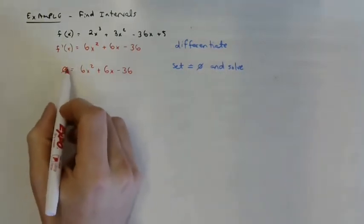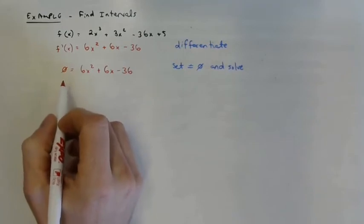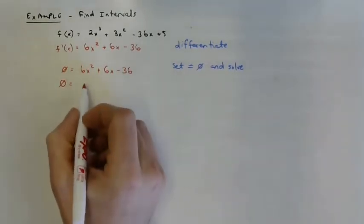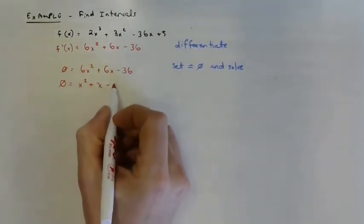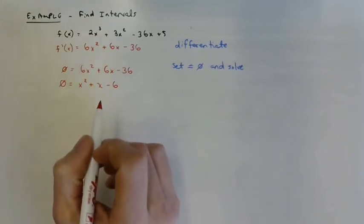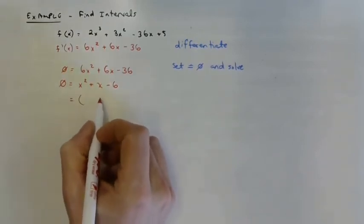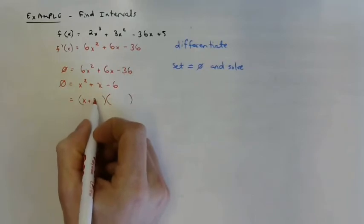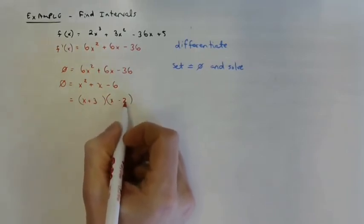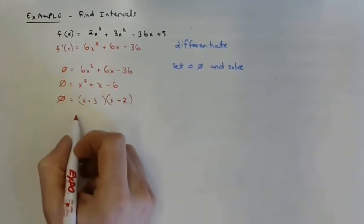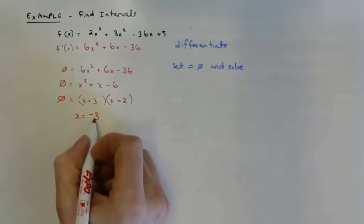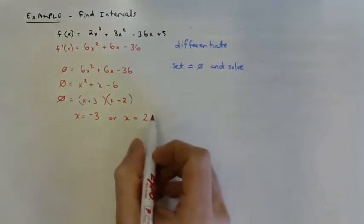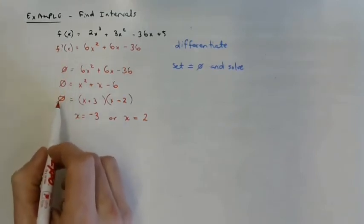Because it's set equal to zero, we can divide every term by six. Zero divided by six is zero, and dividing everything else by six gives us x squared plus x minus six. We factor by finding two numbers that multiply to negative six and add to positive one. That gives us x plus three and x minus two as our factors, so x equals negative three or x equals positive two — these are where f prime of x equals zero.